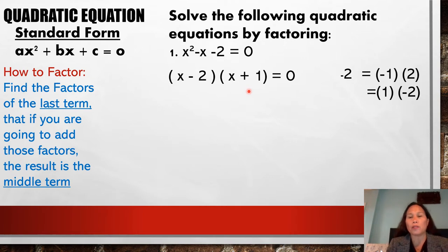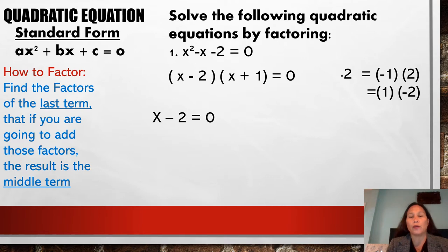But it doesn't end there. What we do now is write the value of x. We have two values of x, so we separate them. Equate each factor to zero: x minus 2 is equal to 0, and x plus 1 is equal to 0.